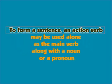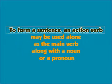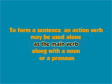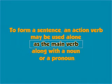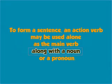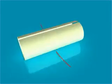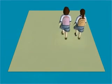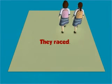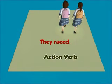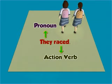To form a sentence, an action verb may be used alone as the main verb along with a noun or a pronoun. For example: 'They raced.' Here, the action verb raced is used with the pronoun 'they' to form the sentence.